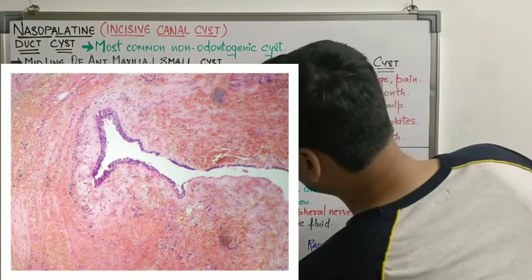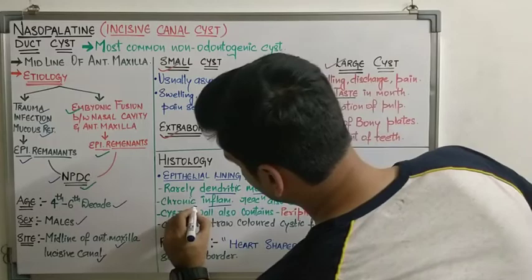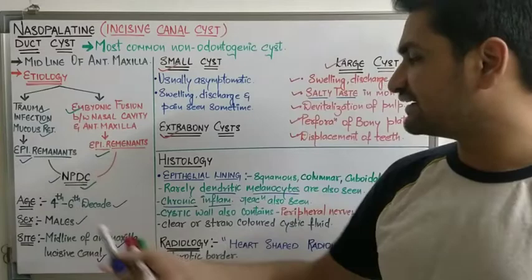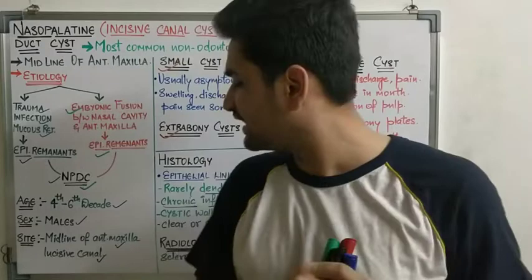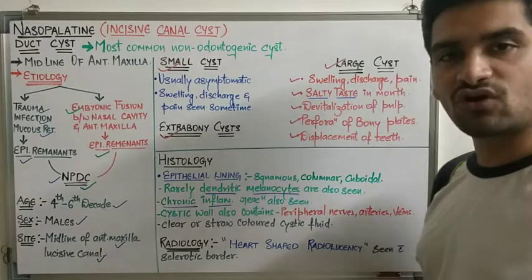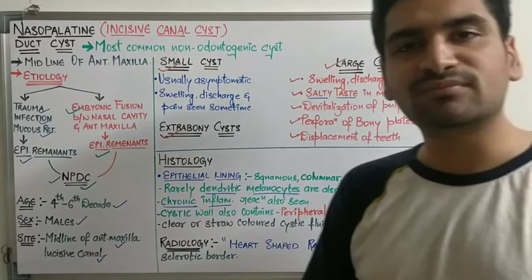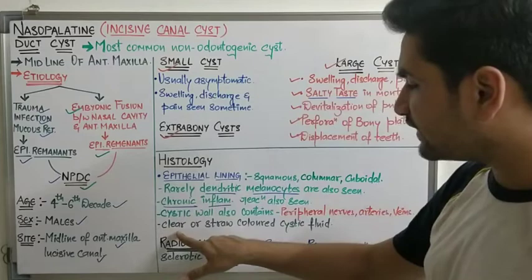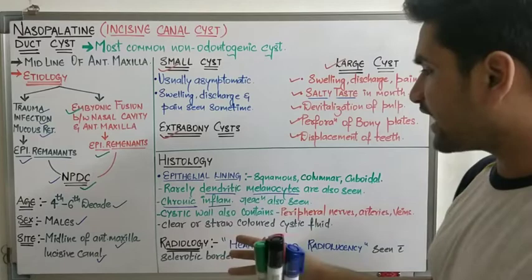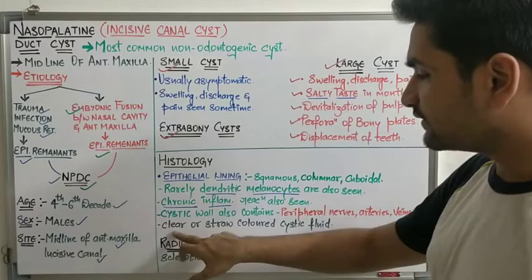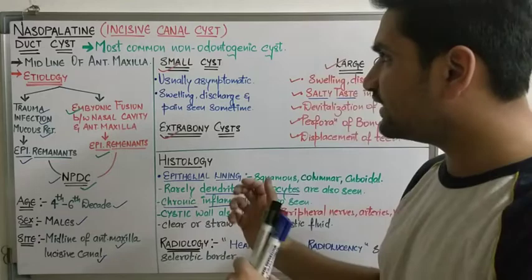In the cystic wall, you will rarely see dendritic melanocytes. Sometimes you will see chronic inflammation due to infection or trauma — with the presence of lymphocytes and plasma cells. The cystic wall may also contain peripheral arteries or veins associated with the nasopalatine canal. The cystic cavity contains clear or straw-colored cystic fluid, though this alone is not the basis for diagnosis.